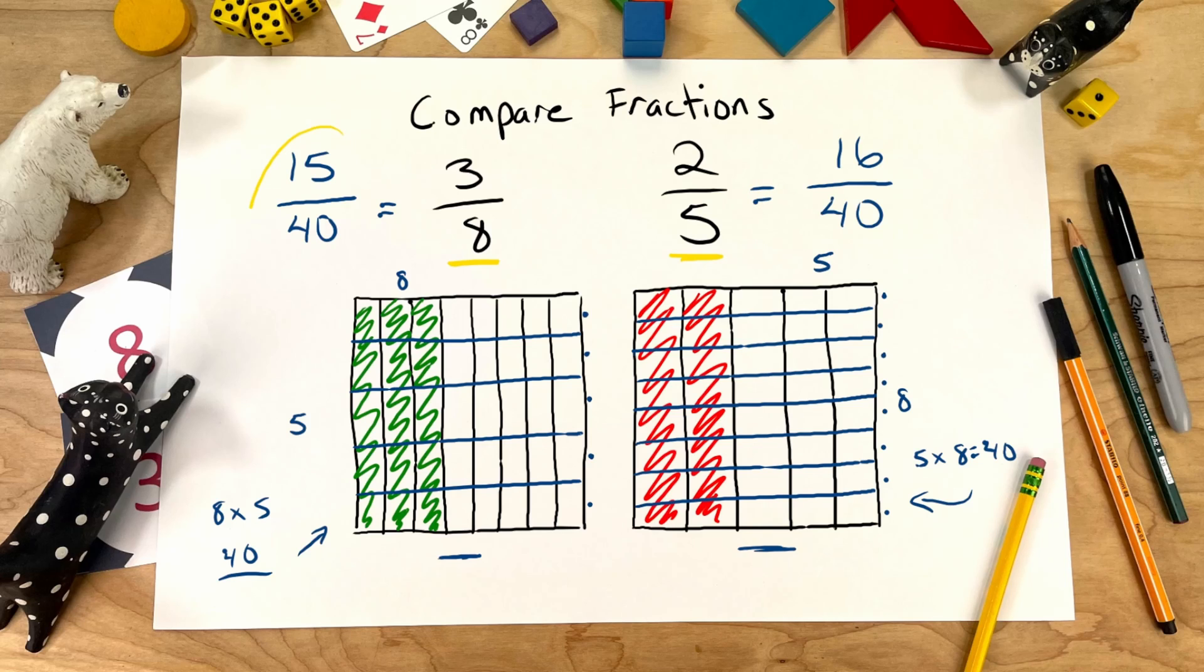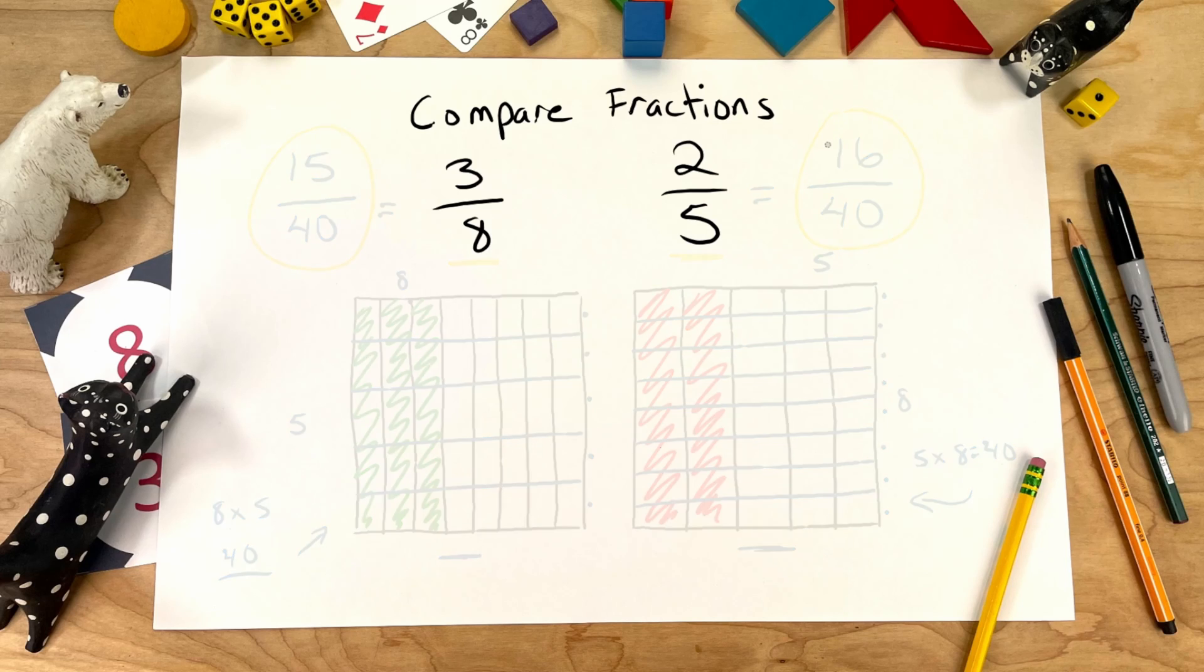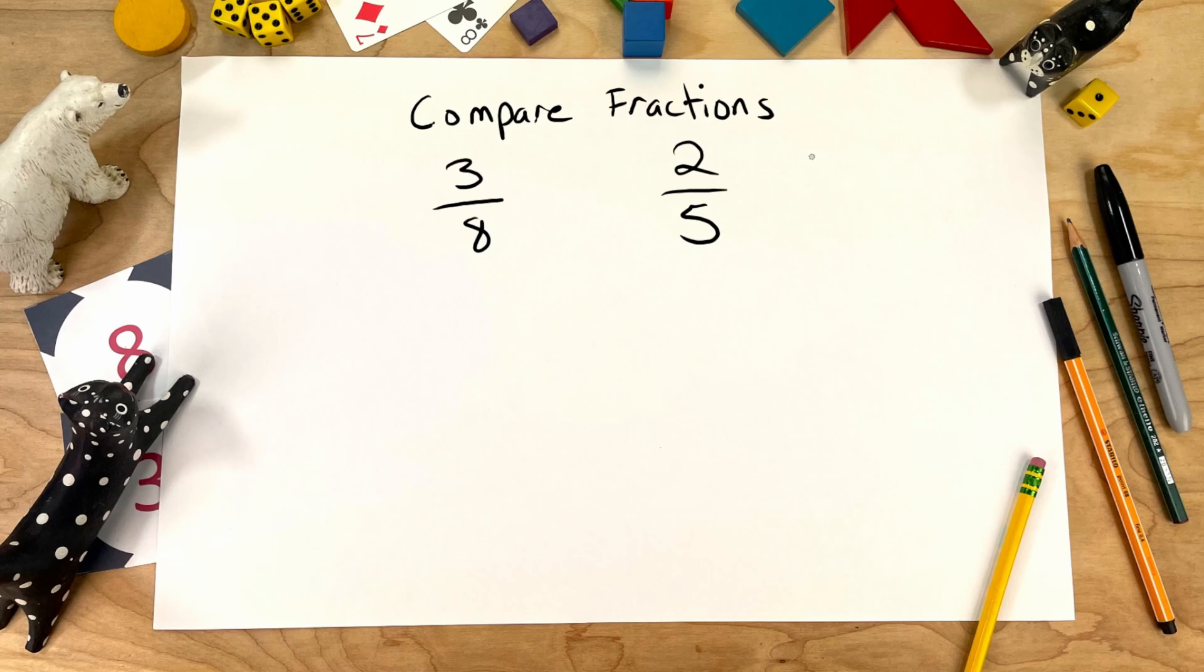We can compare 15 fortieths to 16 fortieths to know more about these fractions. Let's think of this another way. What we want to make are like fractions. So, let's try this.